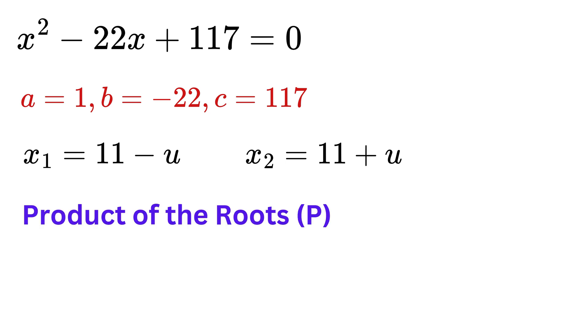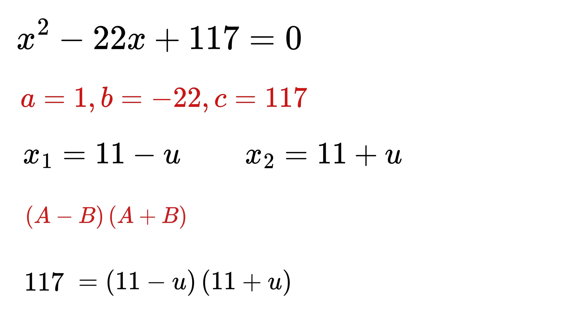Now, here comes the magic. We also know that the product of the roots equals C over A, right? So, in this case, it will be 117. But, it is also equal to 11 minus U times 11 plus U. This is of the form A minus B times A plus B, which equals A square minus B square. So, this equals 11 square minus U square, or 121 minus U square,